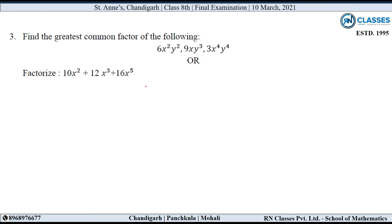Question number 3: Find the greatest common factor of the following. तो हमें greatest common factor देखना है इन तीनों terms में से। सबसे पहले numbers की बात: यहाँ पे 6 है, यहाँ पे 9 है और यहाँ है 3, तो इनमें common आया 3। अब x square, x, और x raised to power 4, तो यहाँ से x common। यहाँ y square, y cube, y raised to power 4, तो यहाँ पे आया y square। तो यह है greatest common factor.